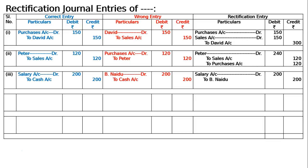To B. Naidu, 200. Now the wrong entry and rectifying entry: B. Naidu debit and B. Naidu credit cancel each other out. The remaining entry is salary to cash, which is the correct entry.